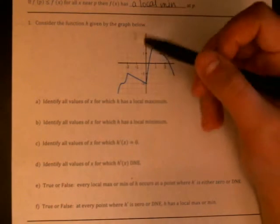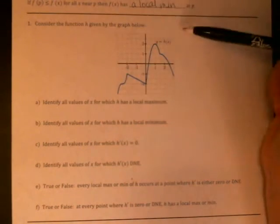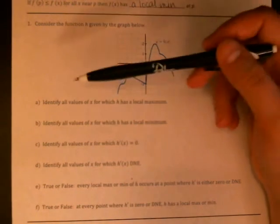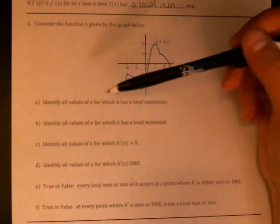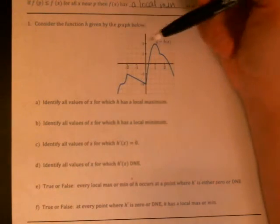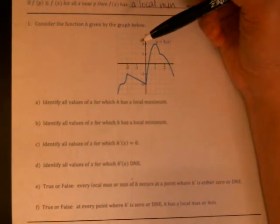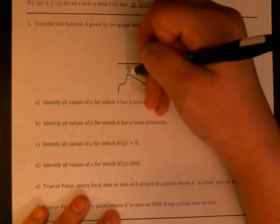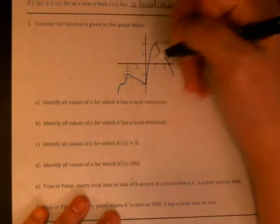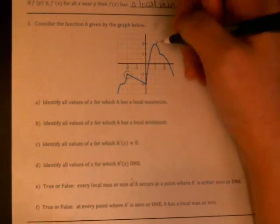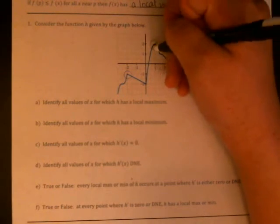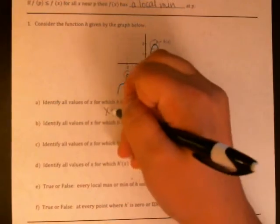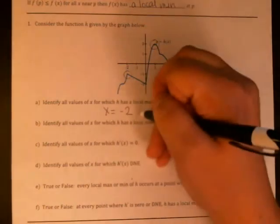Okay so we are supposed to first, looking at this graph, this is h of x, identify all values of x for which h has a local maximum. So a local maximum has y values bigger than everything nearby. I am seeing that right here if you draw a little circle around that point it is the biggest y value in that circle and the same thing right here